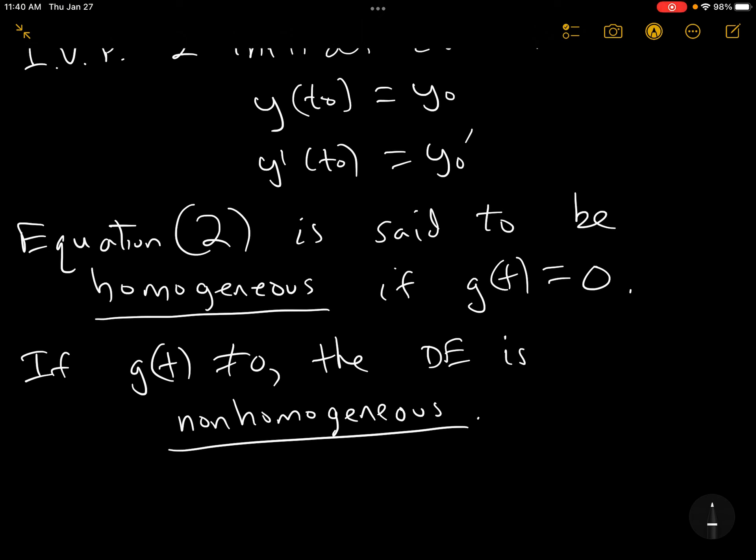Equation two is said to be homogeneous if the G function is zero. Now, this isn't homogenous. This is homogeneous. Milk is homogenous. ODEs are homogeneous. If G sub T is nonzero, the DE is non-homogeneous.